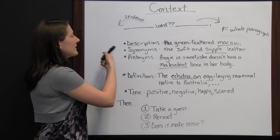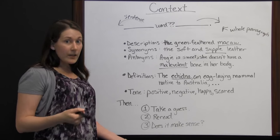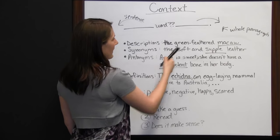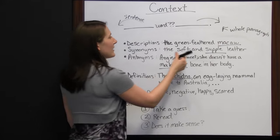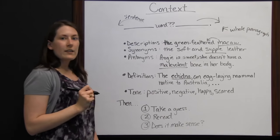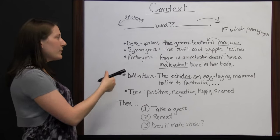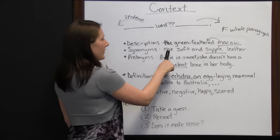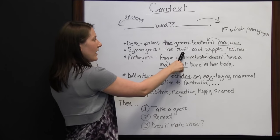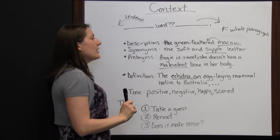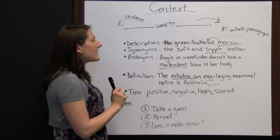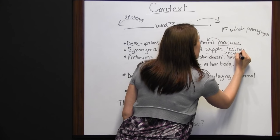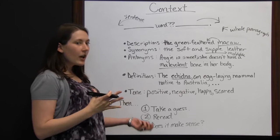There are several clues you can look at. One is a description — sometimes a nearby sentence will give you a description. For instance, 'the green feathered macaw' — you may not know the word 'macaw,' but by seeing 'green feathered' you can infer it's some kind of bird with green feathers. Another clue is synonyms — if you hear 'the soft and supple leather,' since both 'soft' and 'supple' describe leather, you can figure out 'supple' probably has something to do with being soft. In reality, it means moldable — easily moldable.